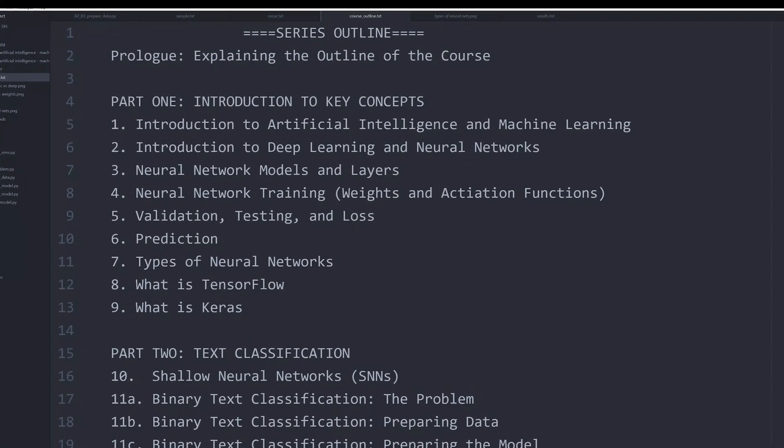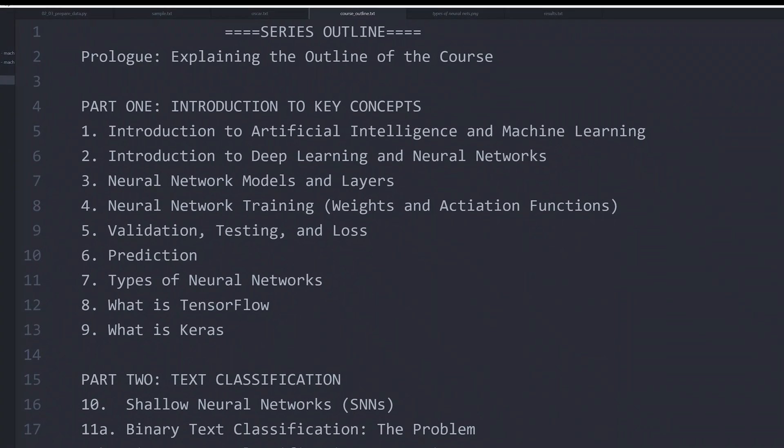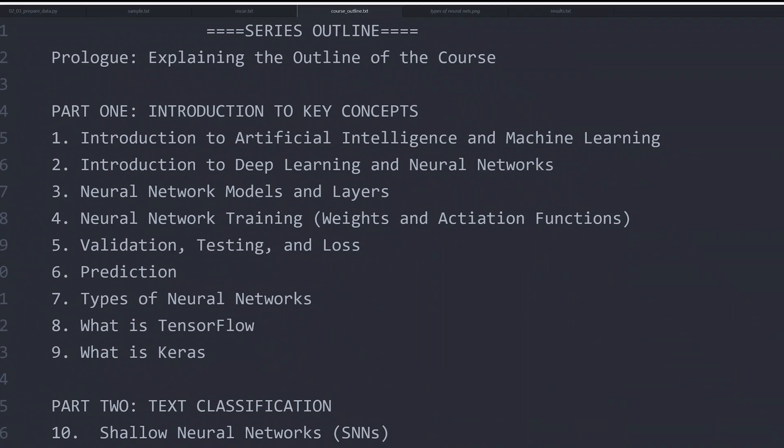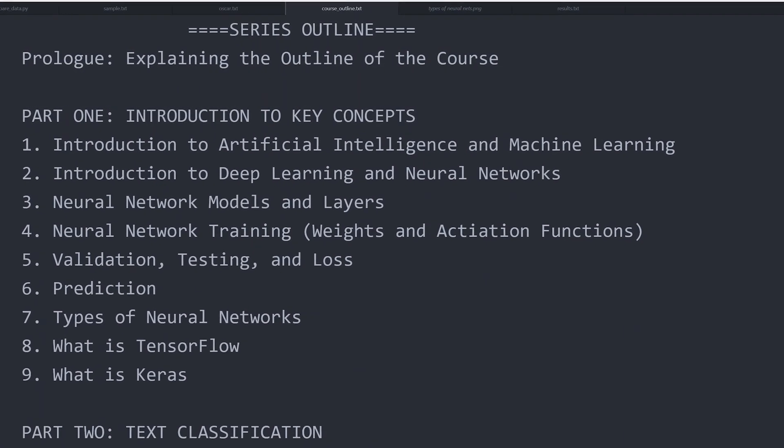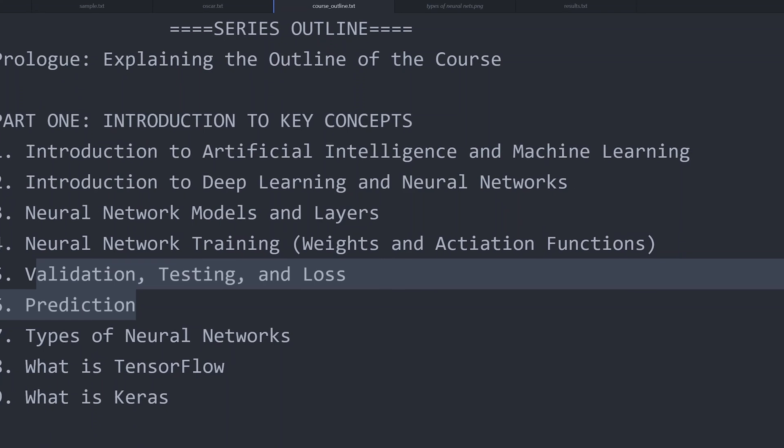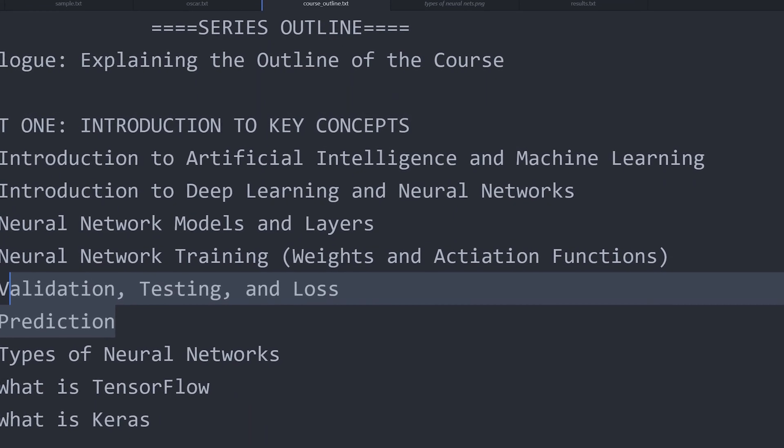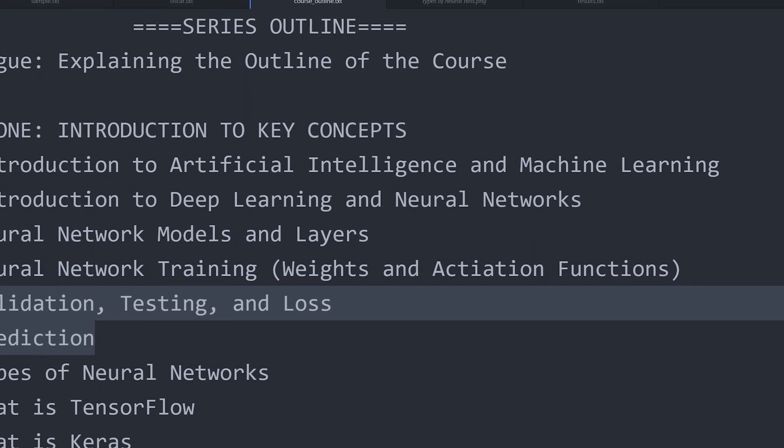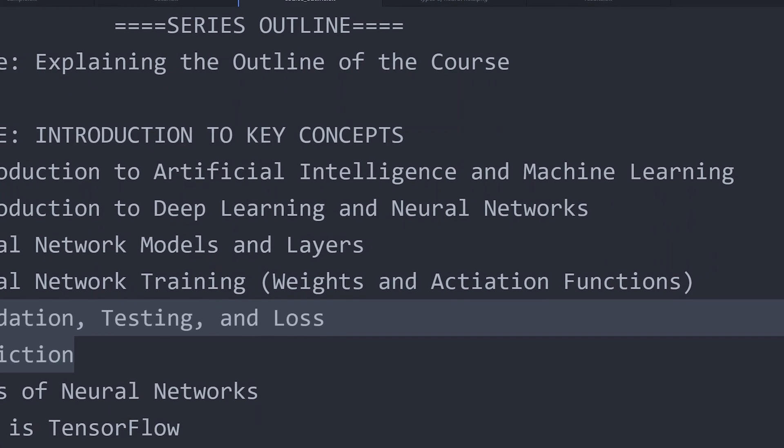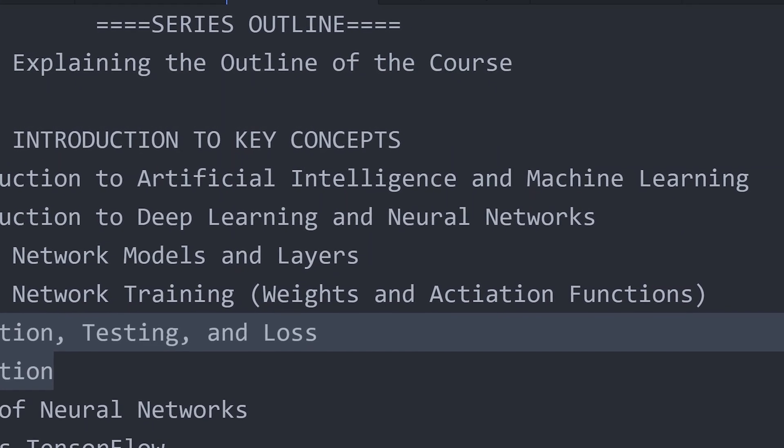Hello and welcome back to the series on neural networks for the purposes of the digital humanities. In the last video we looked at prediction, and in the video before that we looked at other concepts important to neural networks, such as validation, testing, loss, weights, activation functions, etc.